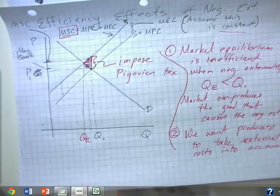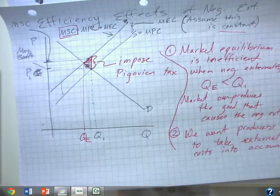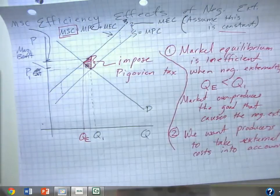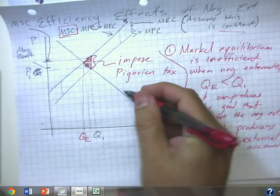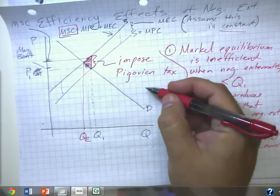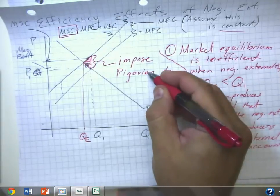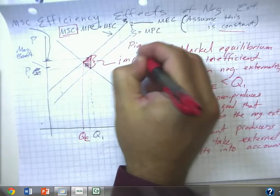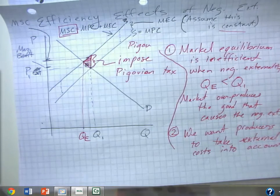Because all this stuff with externalities and so on and so forth, people have realized all this stuff since basically the 1920s. Economists have been able to analyze these environmental issues since at least then. Maybe no one was listening, but it was available as a way to look at it. And the first guy to analyze all this stuff was a guy named Pigou.